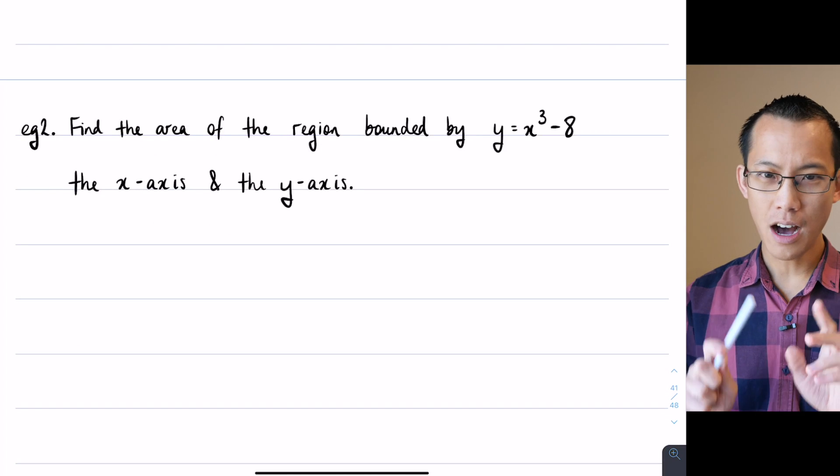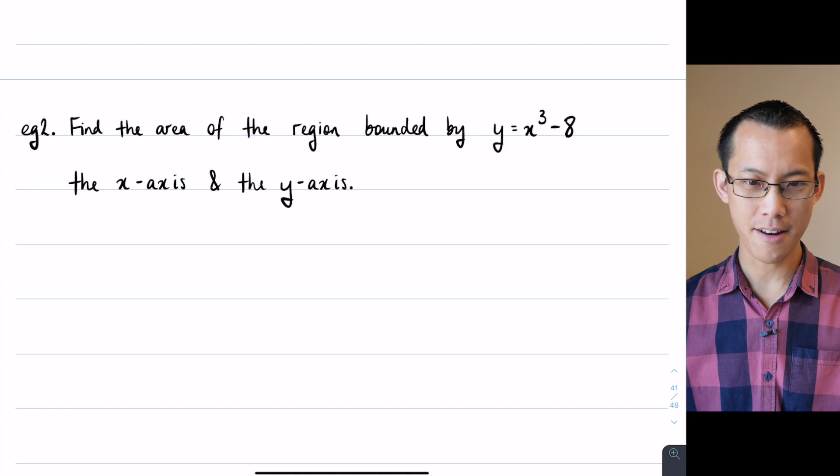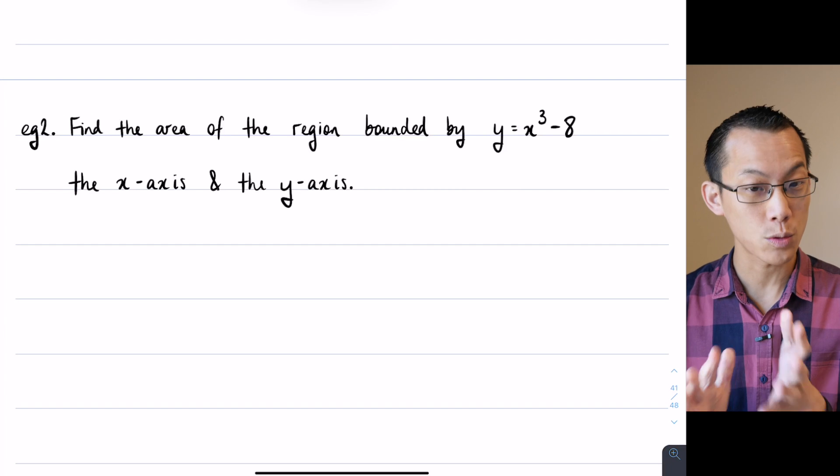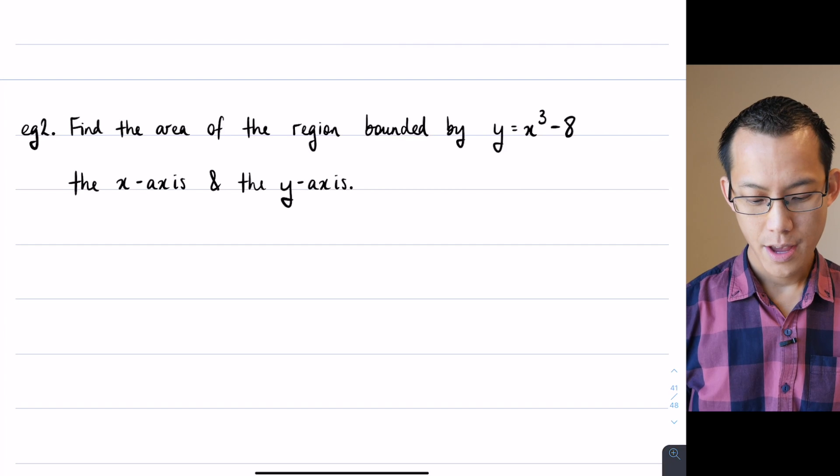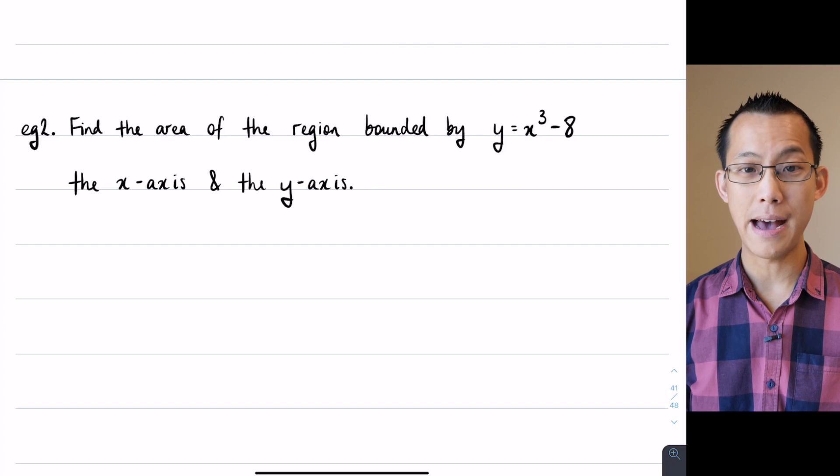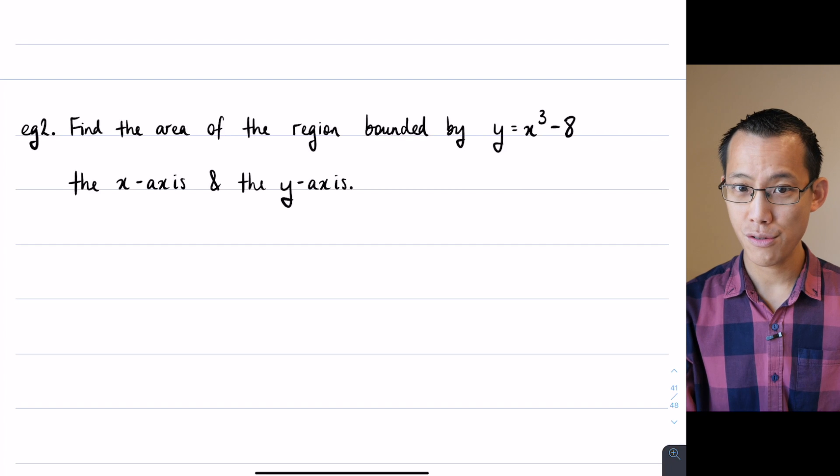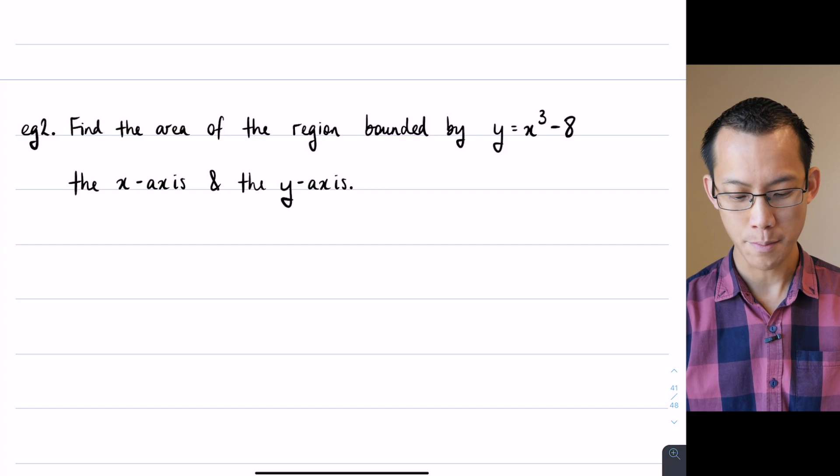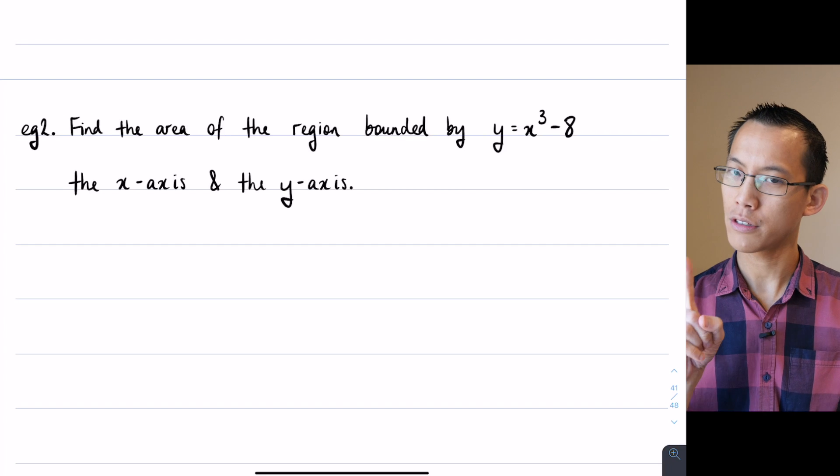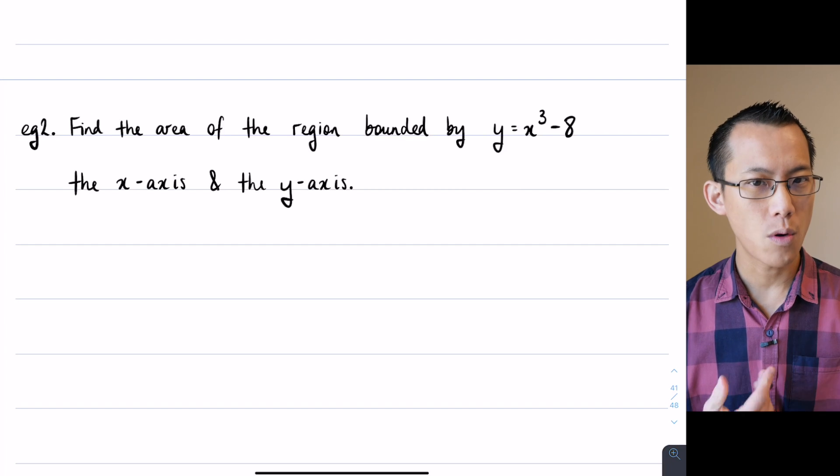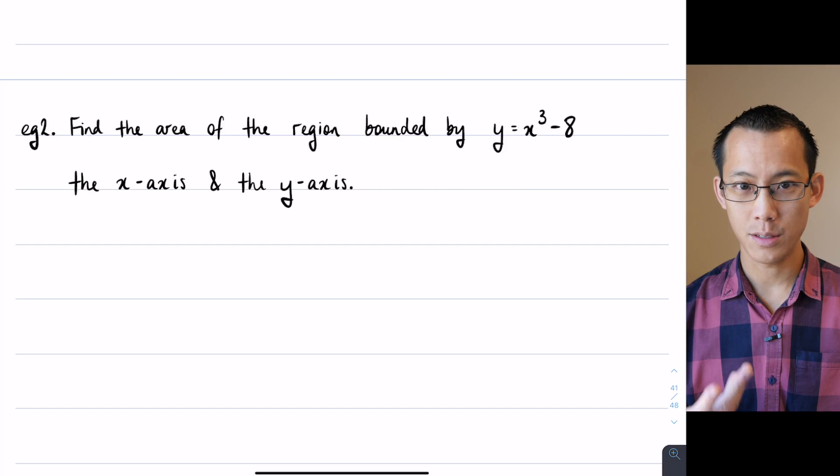Now let's have a look at this guy here. I'm going to let you have a go at this without my help for a minute, but let me just walk you through it and make sure you're doing the right steps. It says find the area of the region bounded by, gives you a new curve, y equals x cubed minus 8, and then it provides you a few other boundaries, not just the x-axis, but this time the y-axis is involved as well.